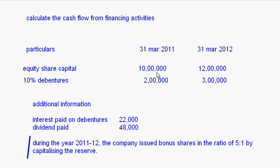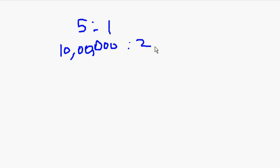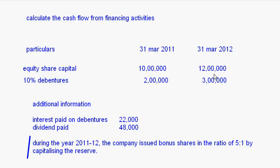The share capital was initially 10,00,000. If you apply the ratio of 5 to 1 for 10,00,000, the bonus shares issued will be 2,00,000 — that is the 5 to 1 ratio. So the increase from 10,00,000 to 12,00,000 is because of the bonus shares, and it will not appear in the cash flow statement.